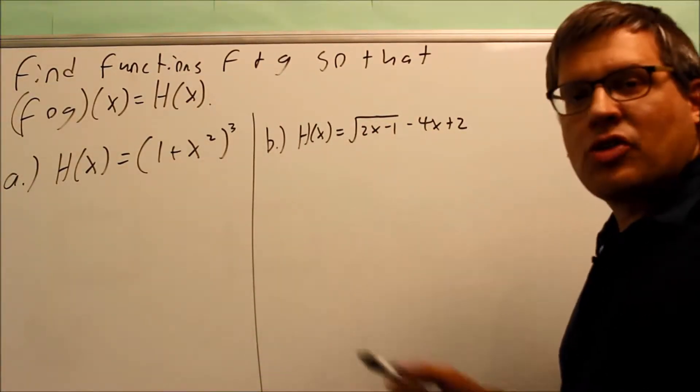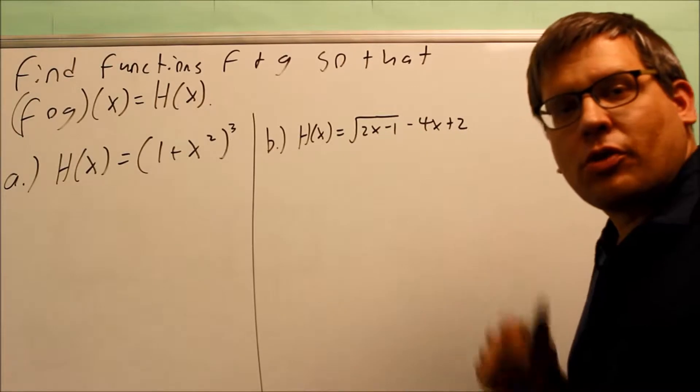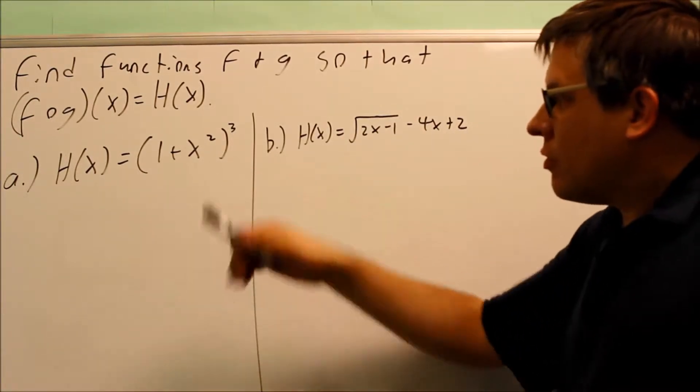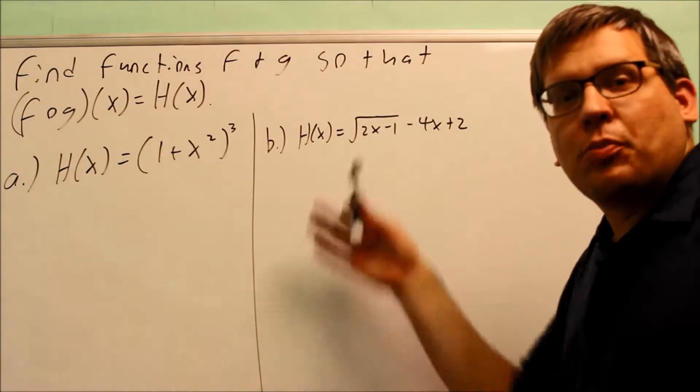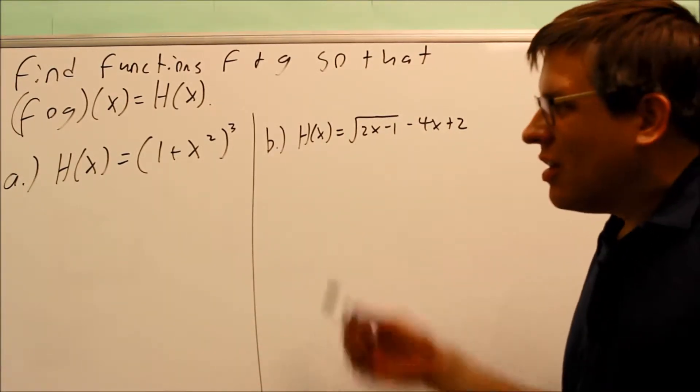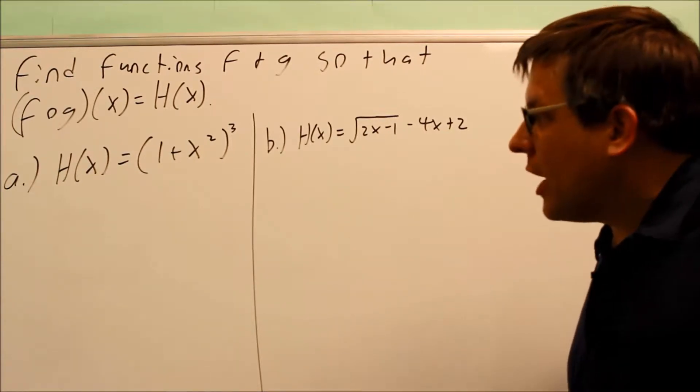Okay, this problem you're doing things in reverse to what was done before. Typically in this section, they give you two functions f and g, you put them together, and you get your final answer for f of g of x. This is different—now they're having you go backwards.